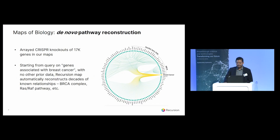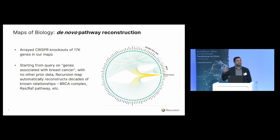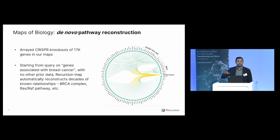In terms of understanding the network of possibilities around disease, what I'm showing here is data from arrayed CRISPR knockouts of 17,000 genes built into our maps of biology. We individually knocked out each of those genes using multiple CRISPR guides to control for off-target effects, and we can identify which gene knockouts produce similar phenotypes in the cell. Starting with all genes associated with breast cancer in the human phenotype ontology and drawing edges between those with statistically significant connections, we get a reconstruction of decades of breast cancer research conducted as a single query in our database — and the BRCA complex immediately jumps out as a tightly connected cluster.